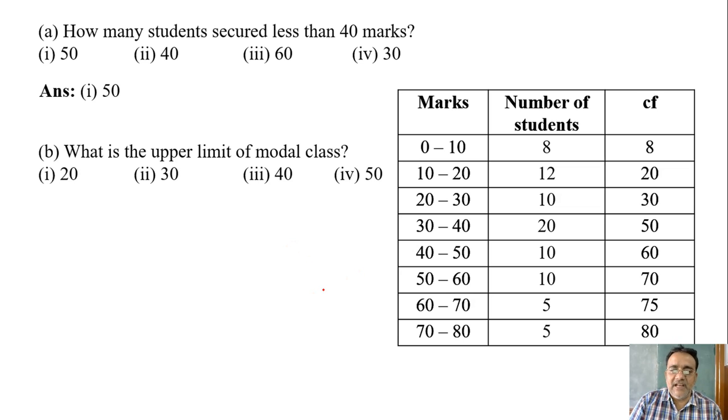Now the next question: what is the upper limit of modal class? So which frequency is the highest frequency here? 20. So modal class is 30 to 40, so which is the upper limit here? 40. So correct option is option 3.